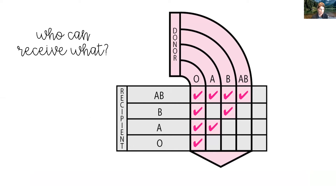Here is a quick snapshot of who can receive what blood, not taking Rh factor into account. AB clients can receive O, A, B, or AB blood — they are the universal recipient. B clients can receive O and B blood. A clients can receive O and A blood. O clients can only receive O blood — they are the universal donor.